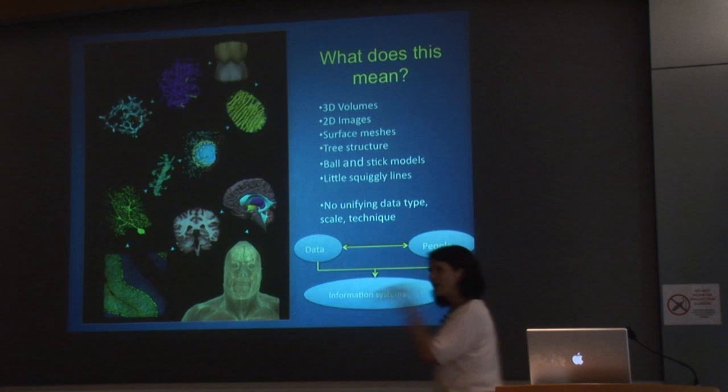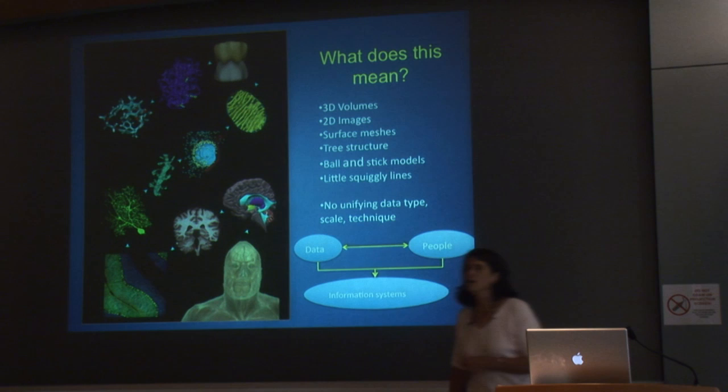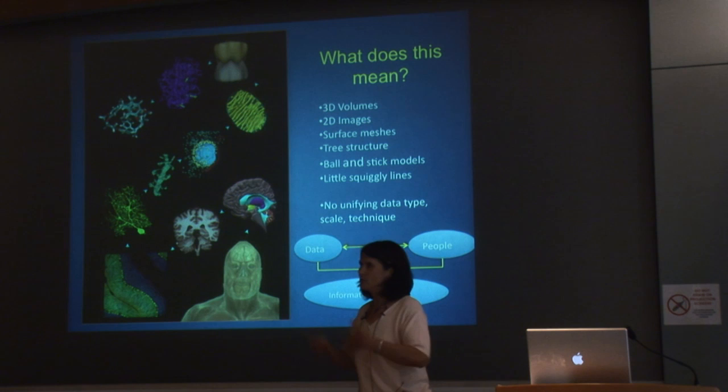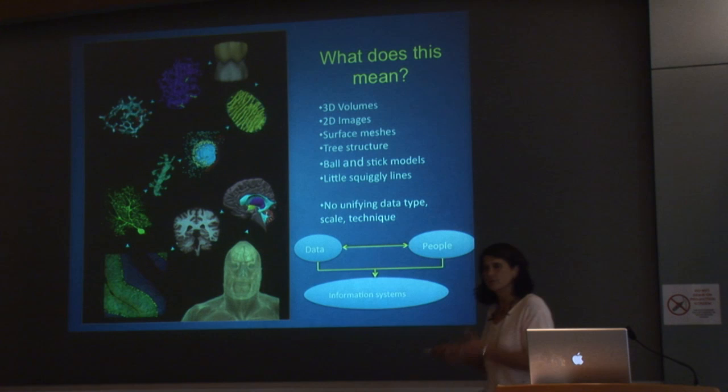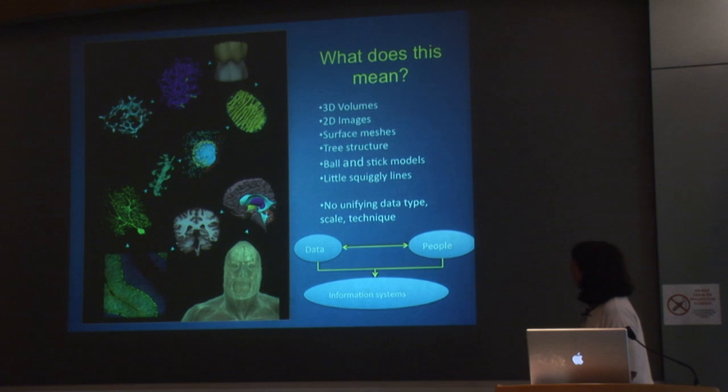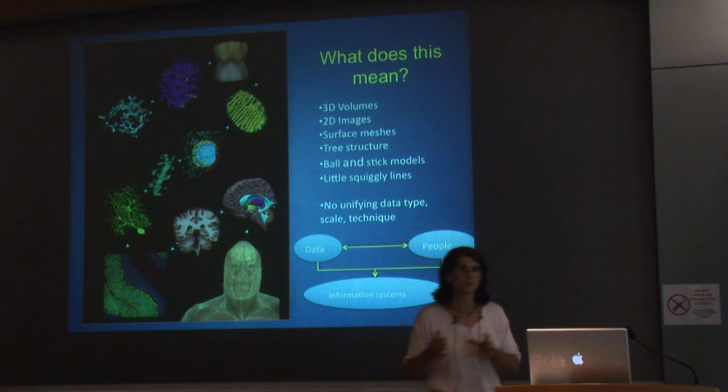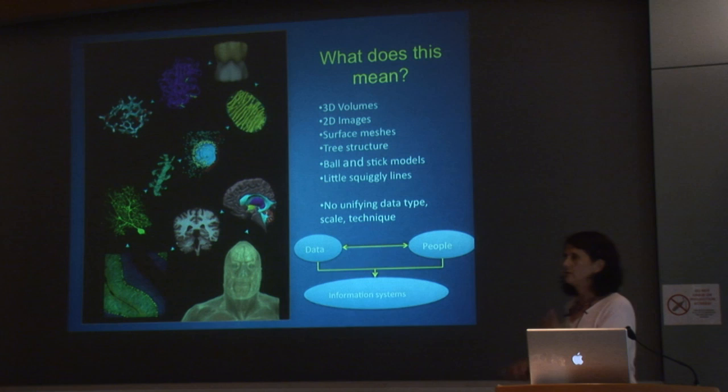To a computer, 3D volumes, 2D images, surface meshes, tree structures, ball and stick models, and little squiggly line things are all different things. To me as a biologist, I understand how they relate together. We don't rally around data types or techniques. The only thing that ties us together is an understanding of the way the biological system works—in our case, the nervous system. So we have data, people, and information systems that need to talk to one another, and the relationships amongst these things are not inherent in the data types themselves.